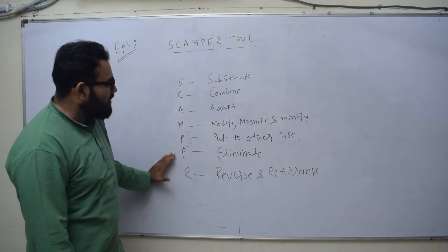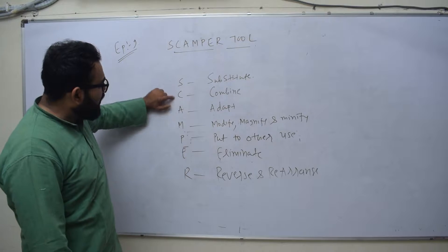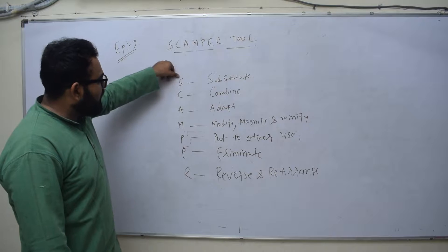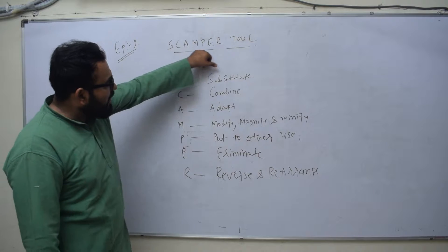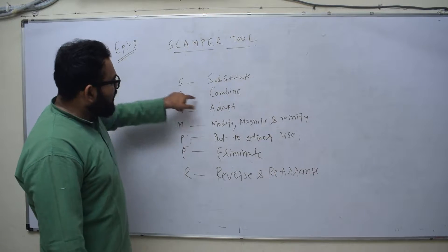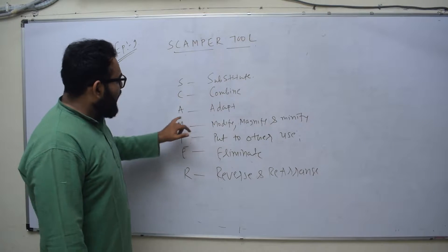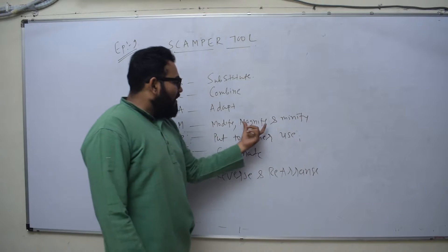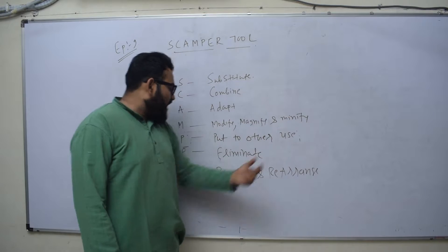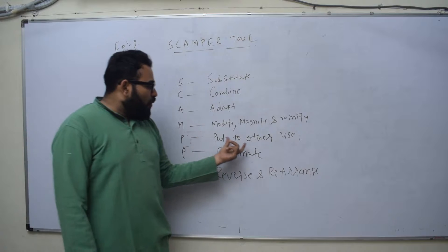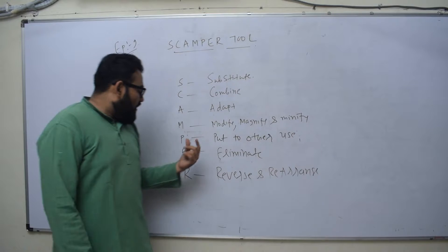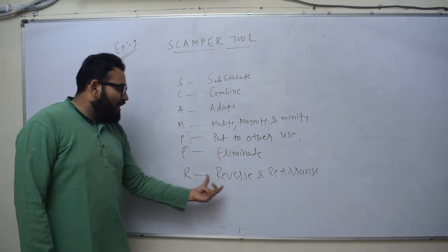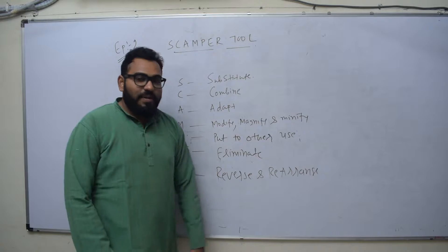The SCAMPER tool — SCAMPER stands for: S means Substitute, C means Combine, A means Adapt, M means Modify, Magnify, or Minify, P means Put to Other Use, E means Eliminate, and R means Reverse and Rearrangement.